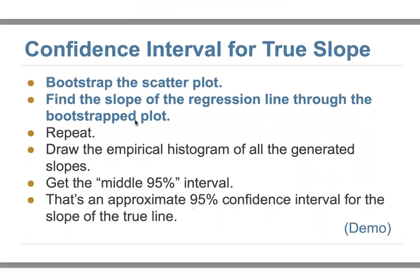Since we have the prediction interval, we also want to talk about our true slope — it's possible to illustrate the confidence interval for the true slope. There is a true line, but what is its slope? We can find the slope for the regression line, but we still don't know the true slope. We can construct a confidence interval for it using bootstrap.